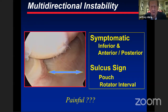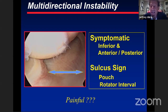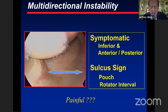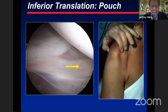Just because someone is loose-jointed and has shoulders that move in multiple directions does not necessarily make it a multidirectional instability, unless there's increased symptomatic inferior translation combined with either anterior, posterior, or both. Most of us discuss patients who have a sulcus sign and look at the pouch as the humeral head subluxing into it, as this picture depicts.